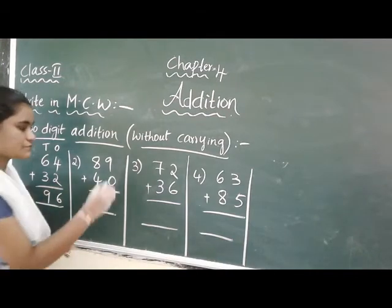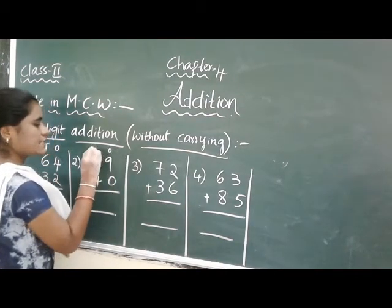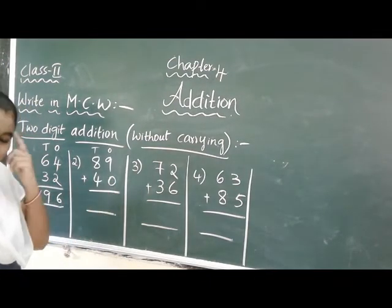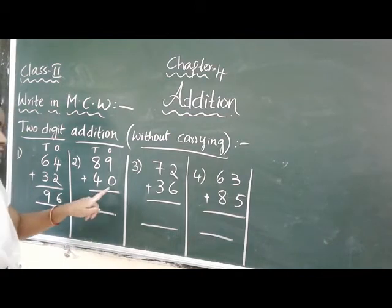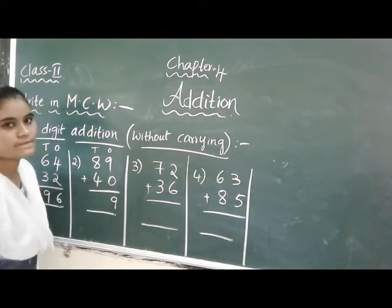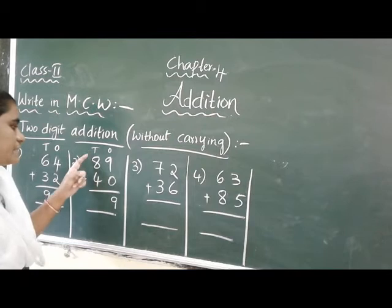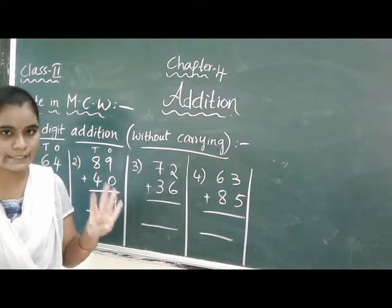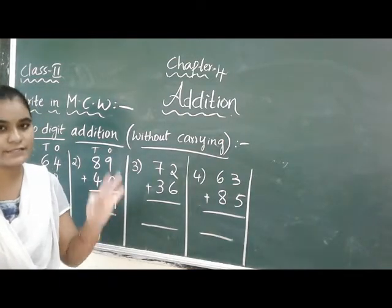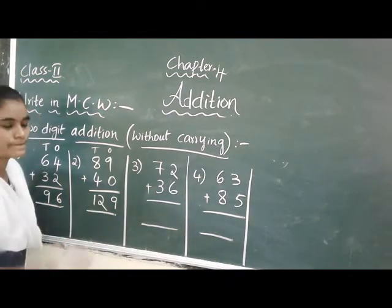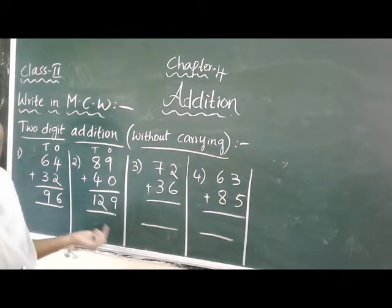Next problem. Ones place: 9 in the ones, zero means nothing, so we write 9 as usual. Tens place: 8 in the mind, take 4 fingers, 8 after 9, 10, 11, 12. Answer is 129.